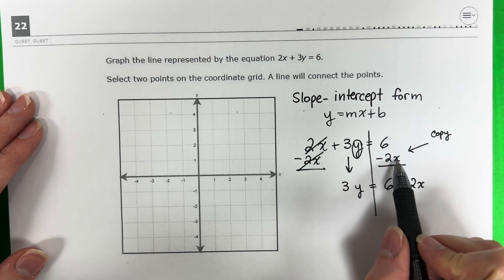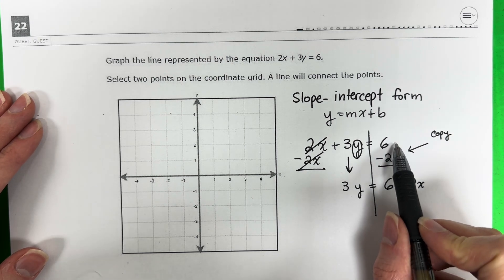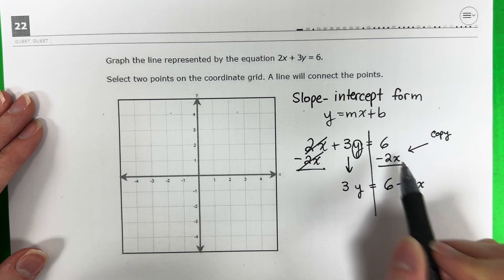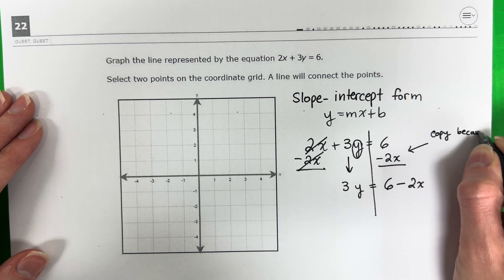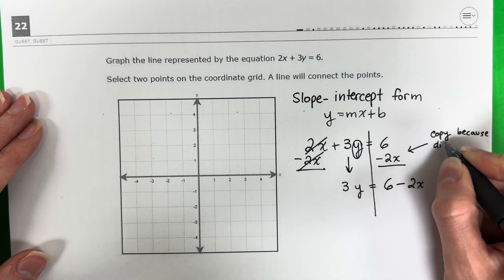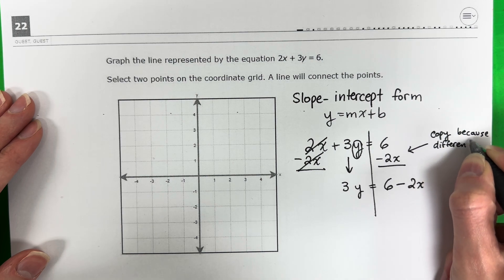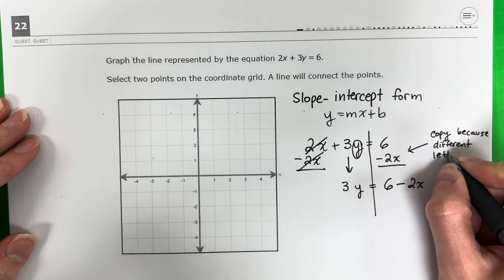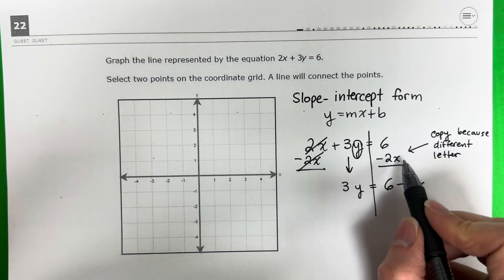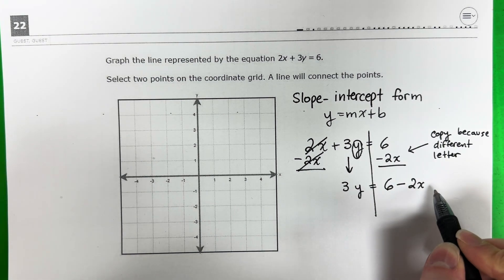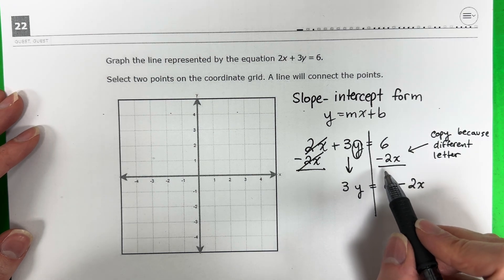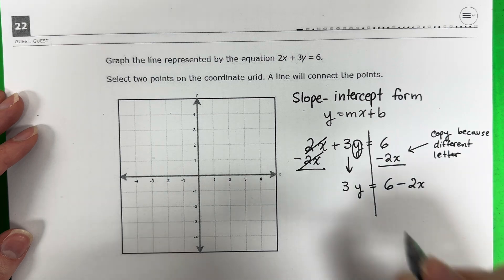Why? Because they are not like terms. What does that mean? That means that here there's an x and here there's no x. They are different. You can only add them or subtract them if they have the same letter. So copy because they have different letters or variables. So no letter x, you're just going to copy. If they both had x, then yes, you would do 6 minus 2 and you would get 4x. Let's continue.